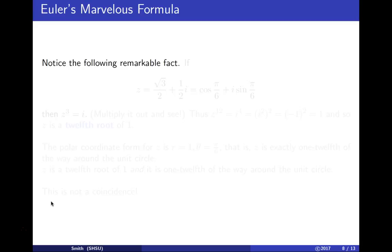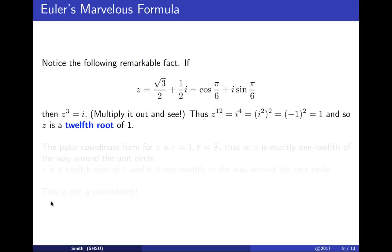Notice this remarkable fact: if I take z = √3/2 + (1/2)i, which equals cos(π/6) + i·sin(π/6), and cube it, I get i. If z³ = i, then z¹² = 1, so z is a 12th root of unity.